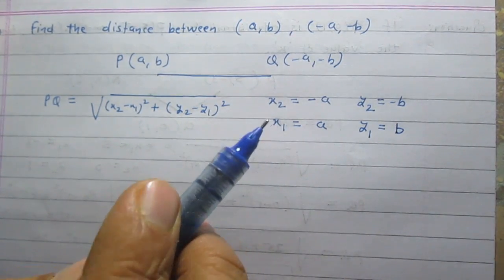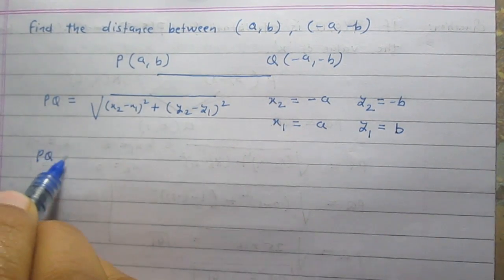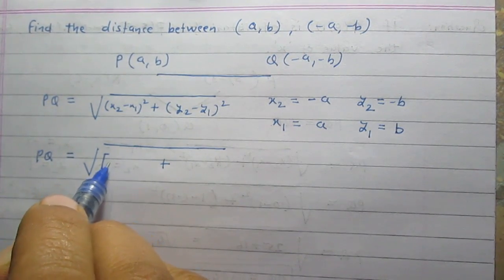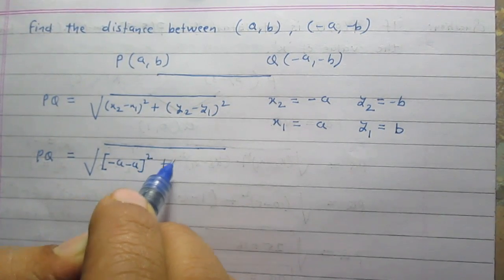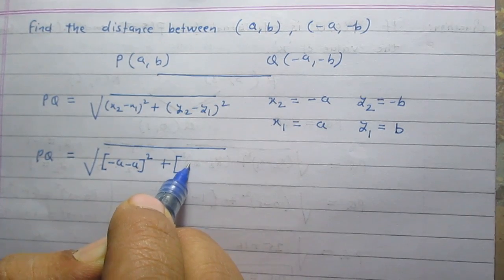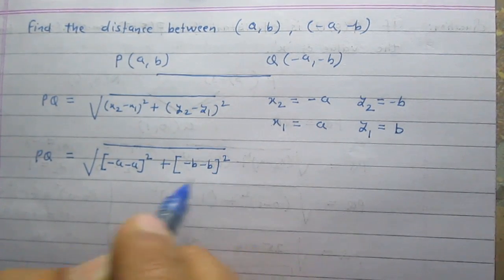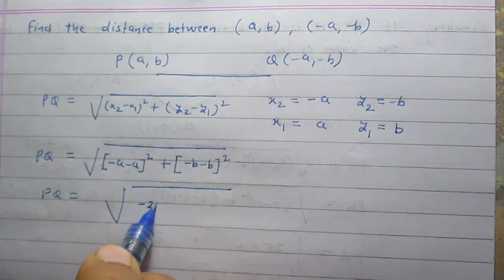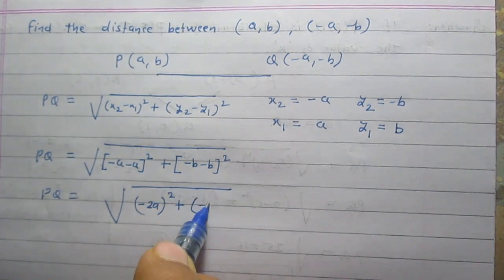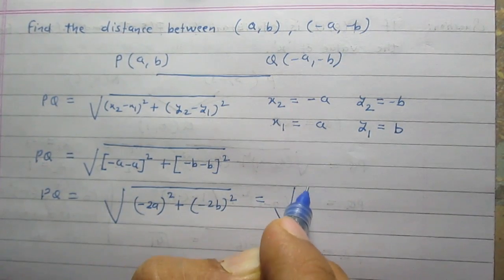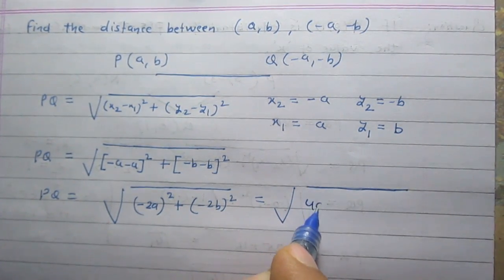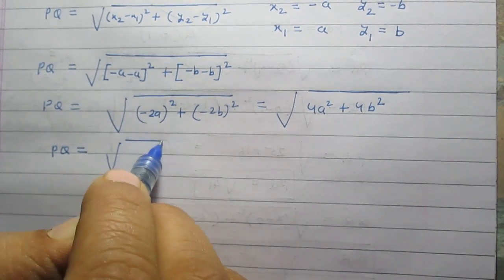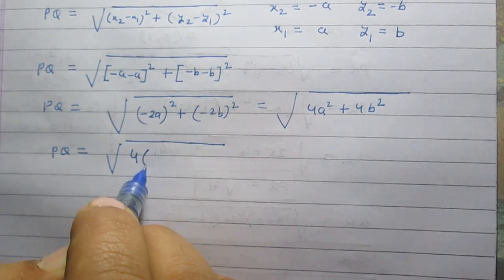After substituting these values in the formula, we get PQ equals the square root of (-a minus a) whole square plus (-b minus b) whole square. So PQ equals the square root of (-2a) whole square plus (-2b) whole square, which gives us the square root of 4a squared plus 4b squared.